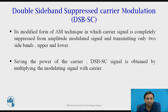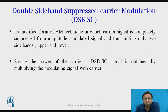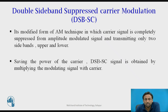Now we will see double sideband suppressed carrier modulation, DSBSC. It is modified from the AM technique in which the carrier signal is completely suppressed from the amplitude modulated signal, transmitting only the two sidebands — upper and lower. The advantage is that we can save a lot of power by suppressing the carrier. A DSBSC signal is obtained by multiplying the modulating signal with the carrier. Two circuit types used to suppress the carrier are the ring modulator and the FET modulator.